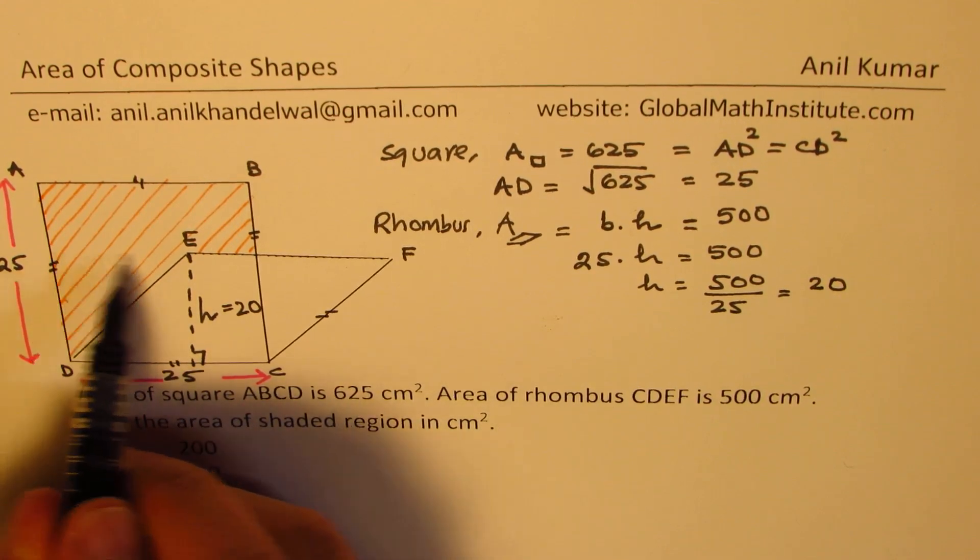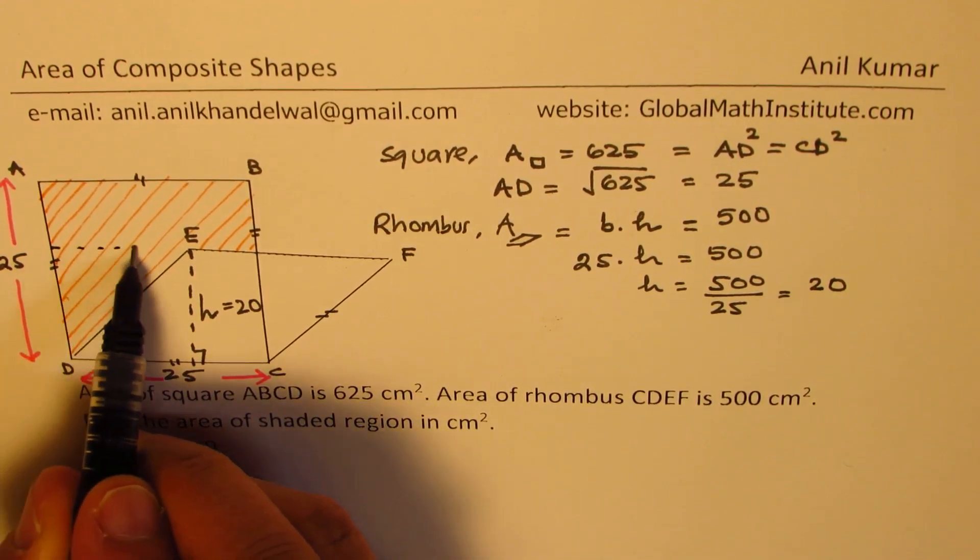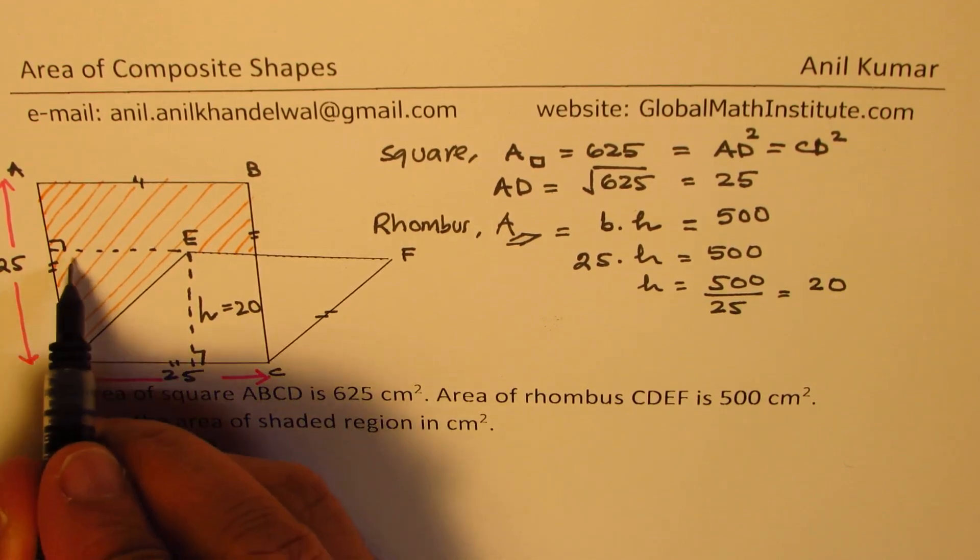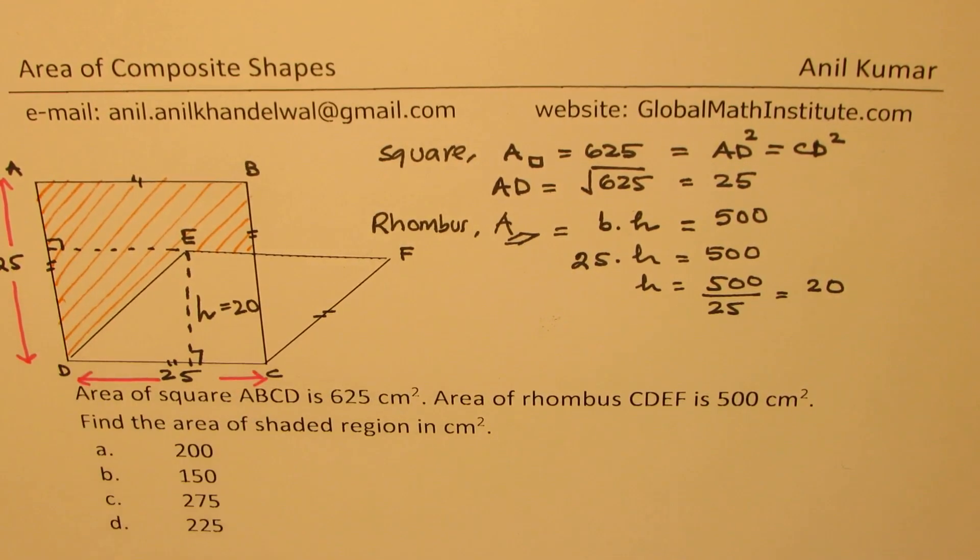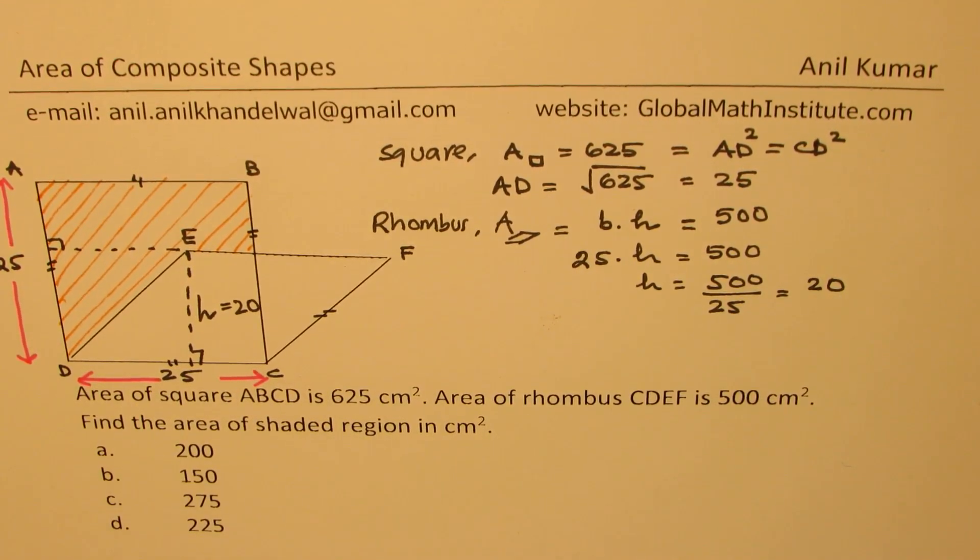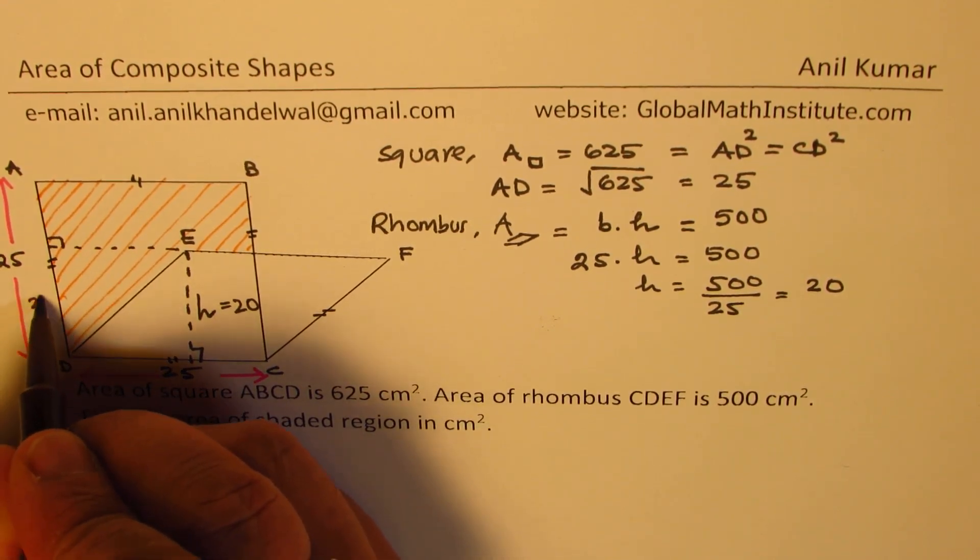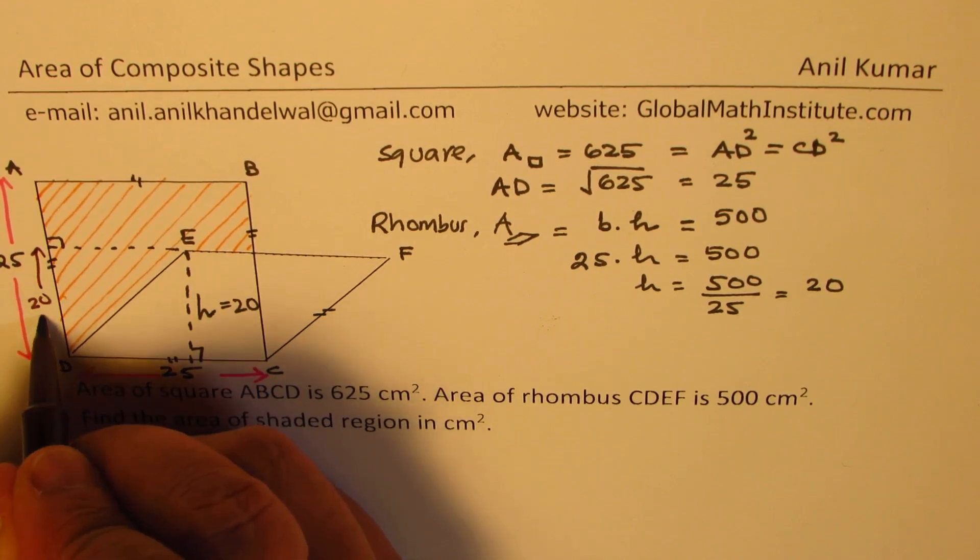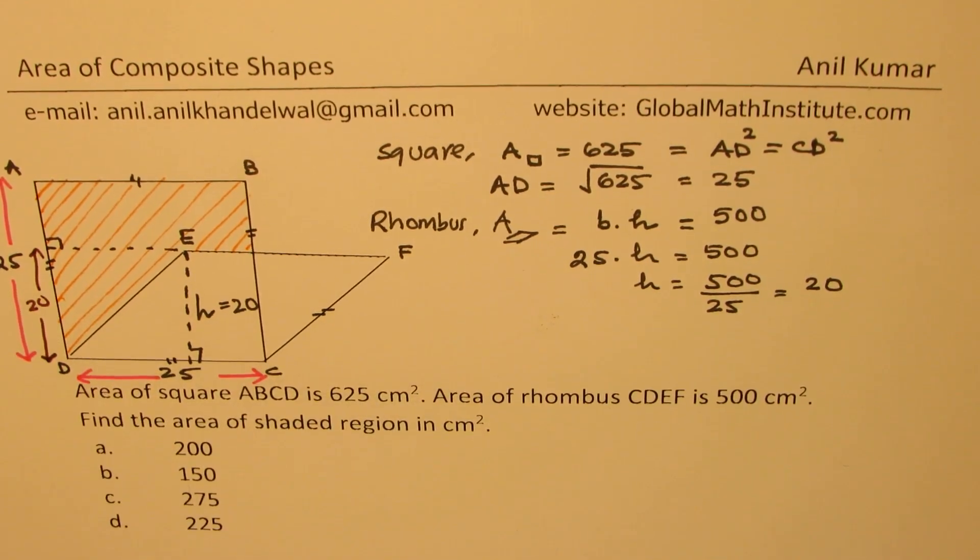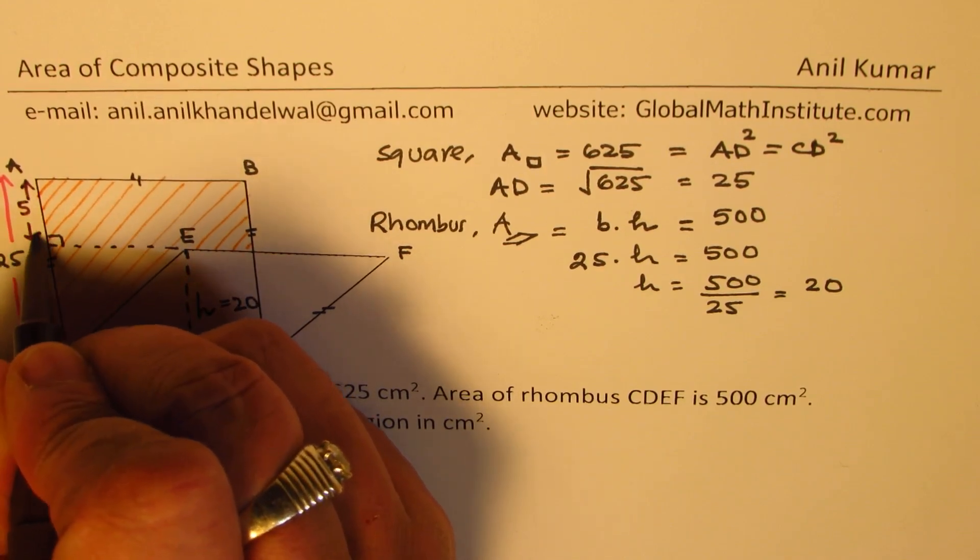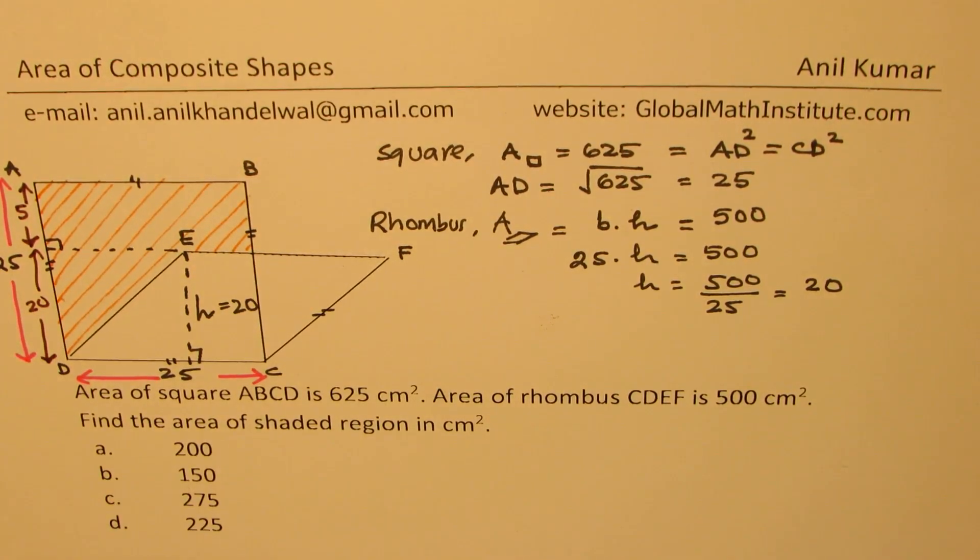So if I drop a perpendicular here, in that case, I know that this much distance is 20. So let's write it down. So we know this is 20. So that leaves us over the top portion as 5 centimeters. Correct?